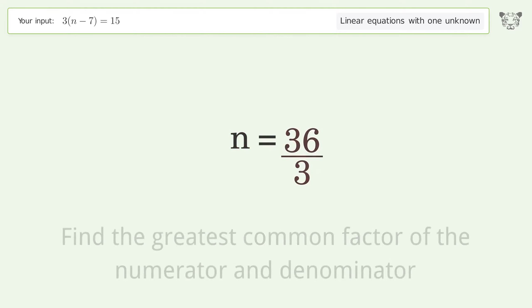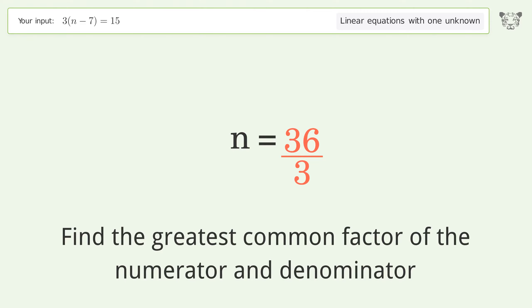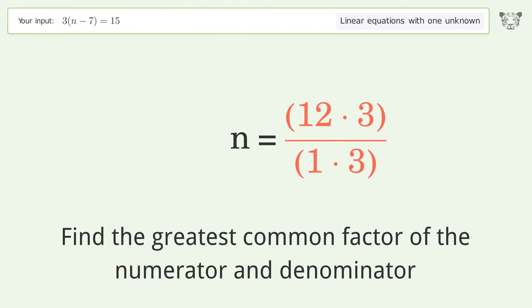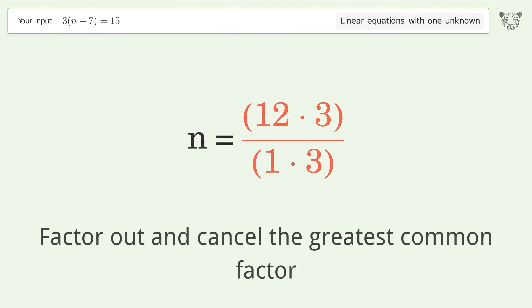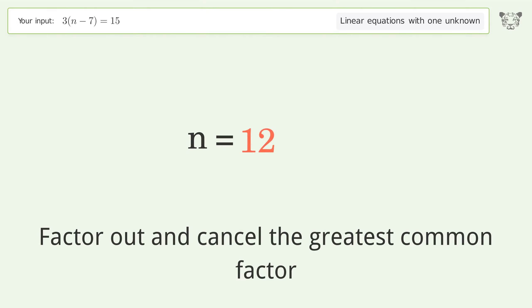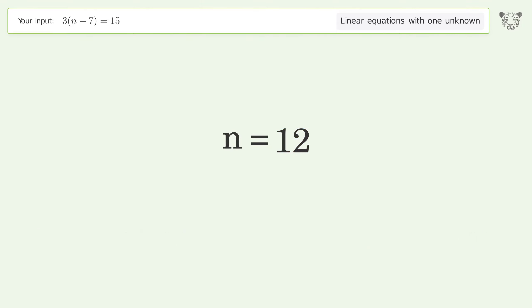Find the greatest common factor of the numerator and denominator, then factor out and cancel the greatest common factor. And so the final result is n equals 12.